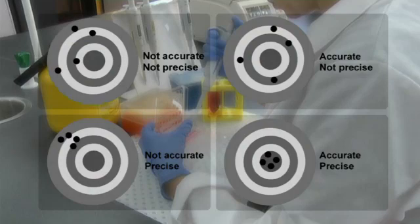In terms of pipetting, accuracy refers to how close we are to pipetting the required volume, while precision refers to how much variability there is between each aliquot we pipet.